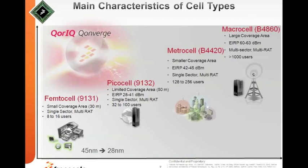Different cell types are needed based on topography — someone could be on the highway, someone in a multi-storey building. The femtocell (9131) is typically for indoor requirements with a small 30-meter coverage area, single sector, supports multiple technologies, and 8 to 16 connections. The picocell has about 50-meter coverage, good for office spaces, higher transmit power, multiple technologies, and supports 100 users.